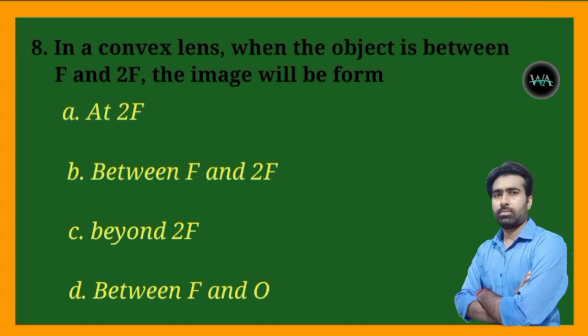Next question: in a convex lens, when the object is between f and 2f, the image will be formed — at 2f, between f and 2f, beyond 2f, or between f and O?